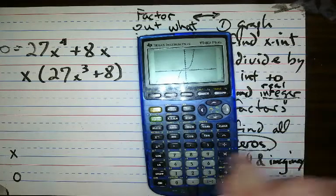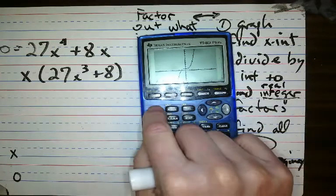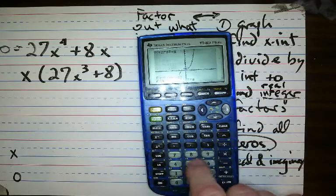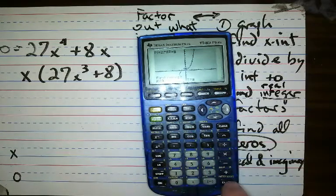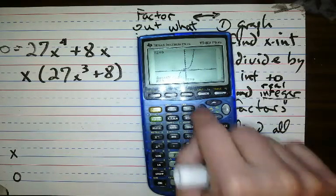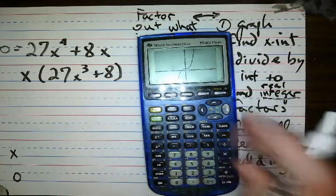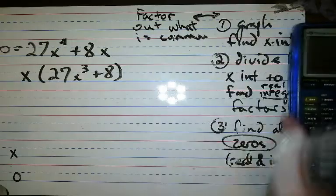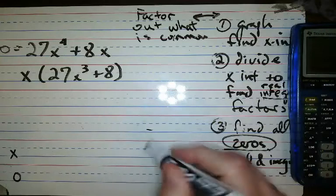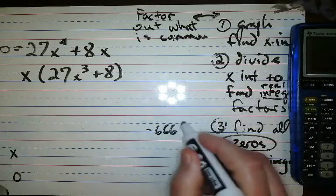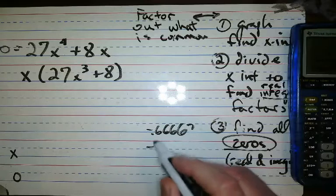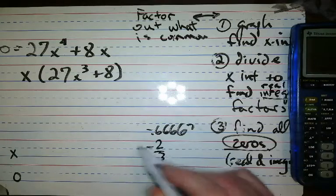So what is that? I'm going to find the intersection. I'm on the first curve, yes. I'm on the second curve, yes. I think it's right there. And they tell me negative 6.667 — negative two-thirds.